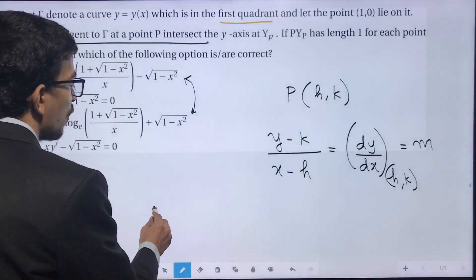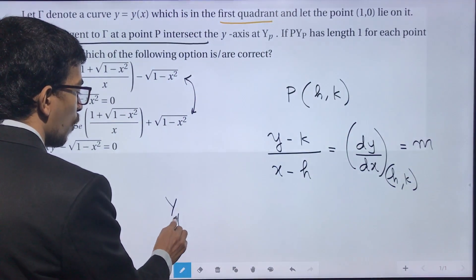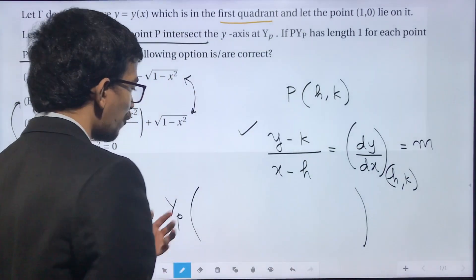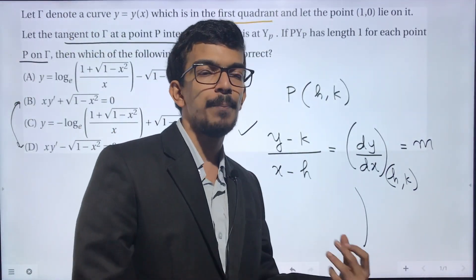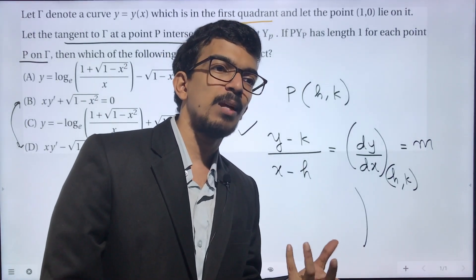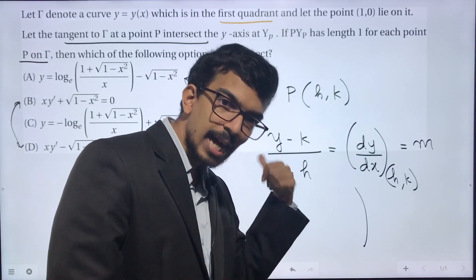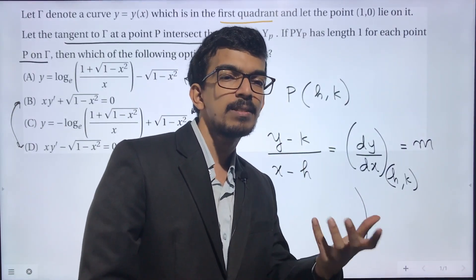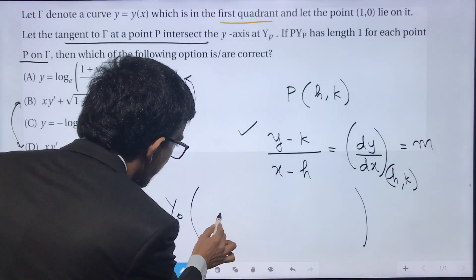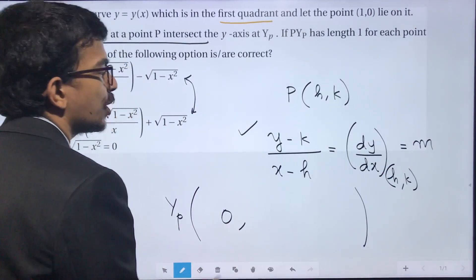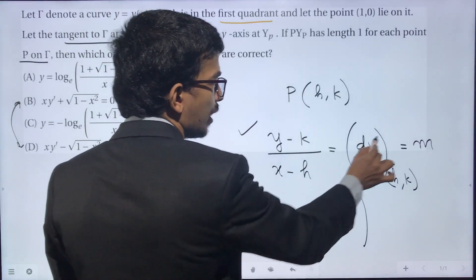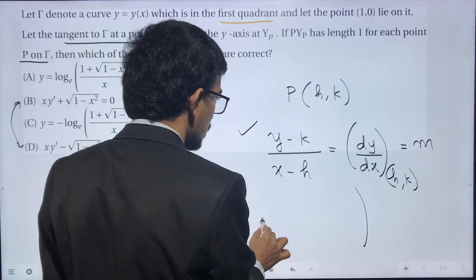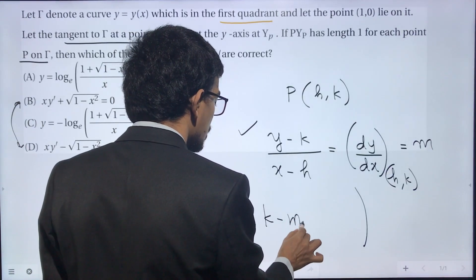Yp is the point where the tangent cuts the y-axis. To find its coordinates, set x = 0. The y-coordinate becomes k − mh. So Yp = (0, k − mh).